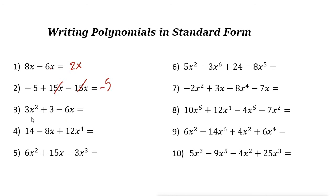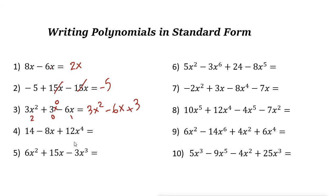Next, we have 3x squared plus 3 minus 6x. We need to find the degree of each term — the degree is the power of the variable. Here the power is 2, so the degree is 2. The constant 3 can be written as 3x to the power of 0, so its degree is 0. The term −6x has degree 1. Writing in standard form, we start from the highest degree: 3x squared minus 6x plus 3.